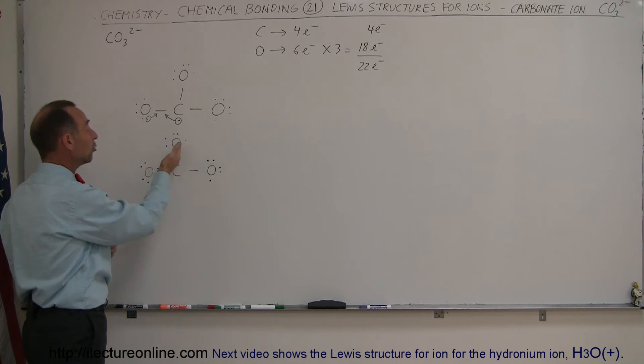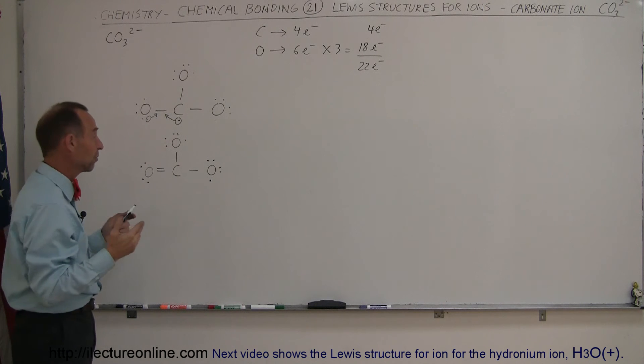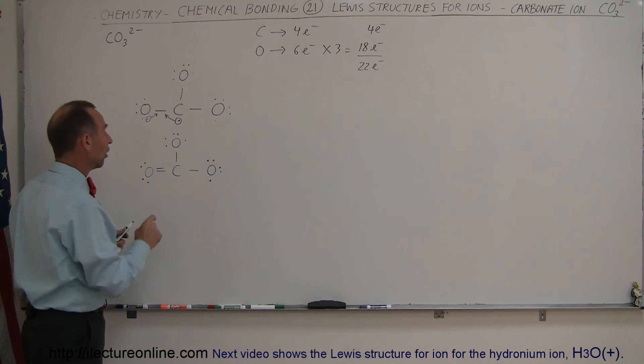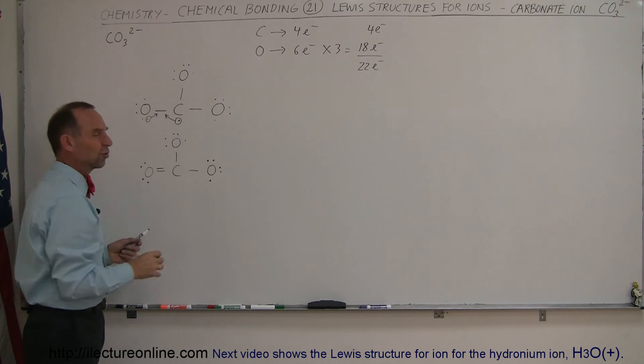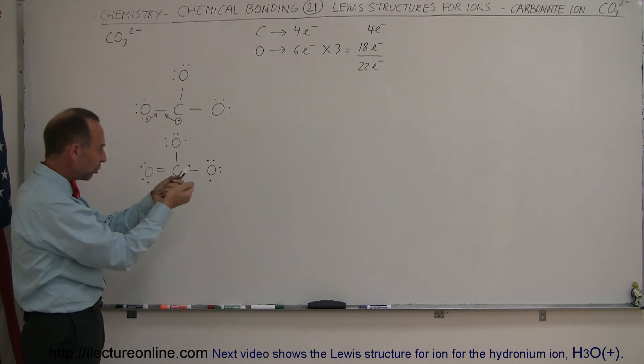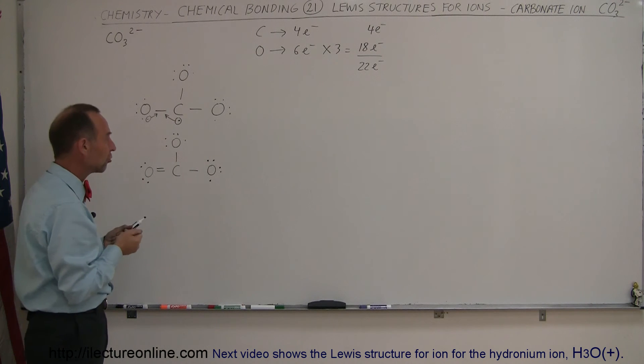But the problem is, carbon has already used up all of its four valence electrons to make four bonds. There's no more electrons to be used to make additional bonds. So what happens here is, since this oxygen only has seven valence electrons and this oxygen only has seven, there's a very strong pull to bring in more electrons.